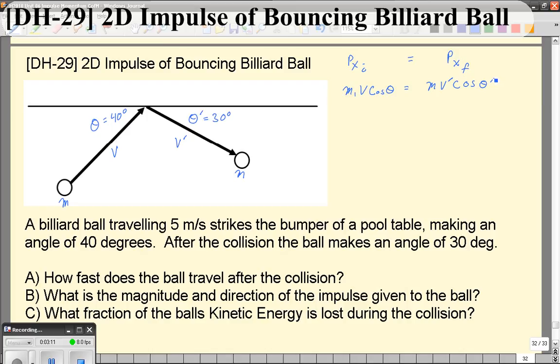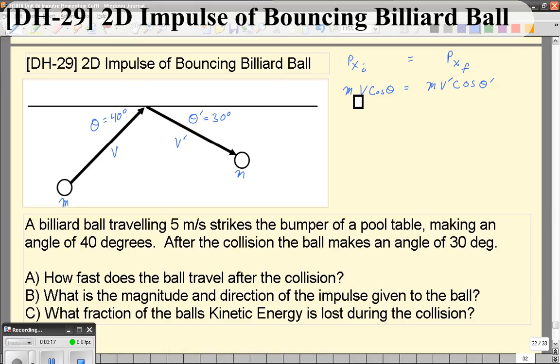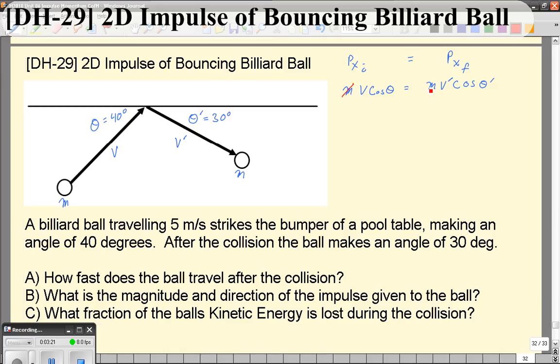Because we're given the angles, we're given v. The m really doesn't matter because the mass is the same before and after. We can solve for the velocity after is simply v, the velocity before, times the cosine of the angle in the beginning divided by the cosine of the angle afterwards.